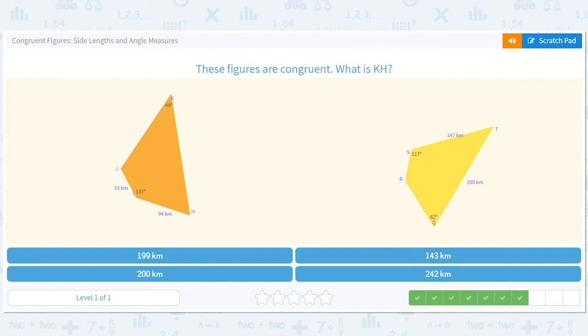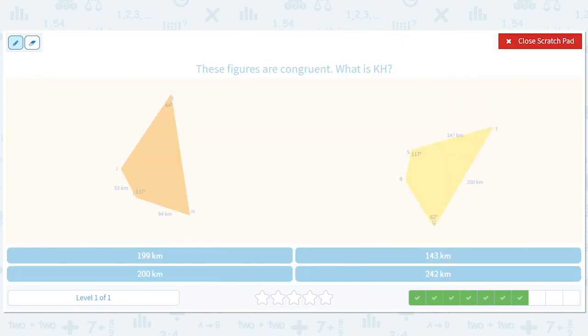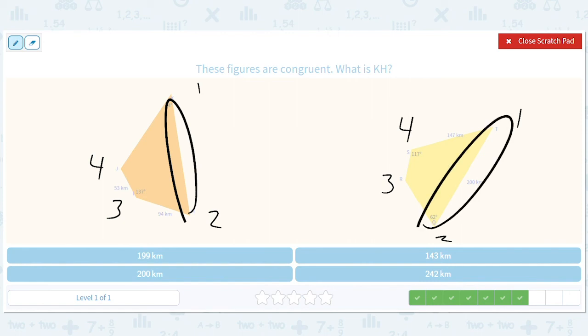The figures are congruent. What is KH? All right, so you can kind of tell these shapes are set up this way without thinking too hard, 1, 2, 3, 4. And you want to know what KH is. So that's this. That's just the long side of this. It's 1, 2. So it's 200.